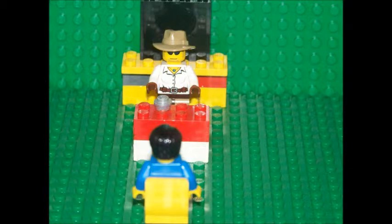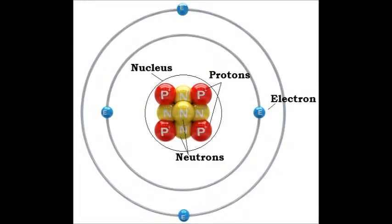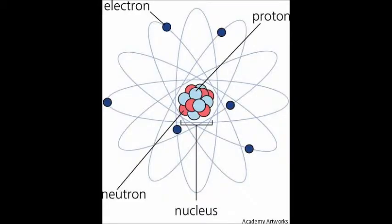Electrons are the particles that orbit the nucleus. Protons are one of the two types of particles in the nucleus. The number of protons gives the element its atomic number. Neutrons are the second type of particle in the nucleus. The number of protons plus the number of neutrons equals the atomic mass.